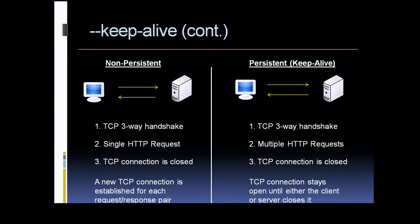That TCP connection will stay open until either the client or the server closes it. If you wanted to, you could pull it up in Wireshark and do a packet capture — submit a request with SQL Map without this switch and then with it, and you'll notice that when you use the keep alive switch there will be a header set in the HTTP response for keep alive, basically saying to keep that one TCP connection open. One thing to note is that the keep alive switch is not compatible with the proxy switch, so you cannot use those two together.